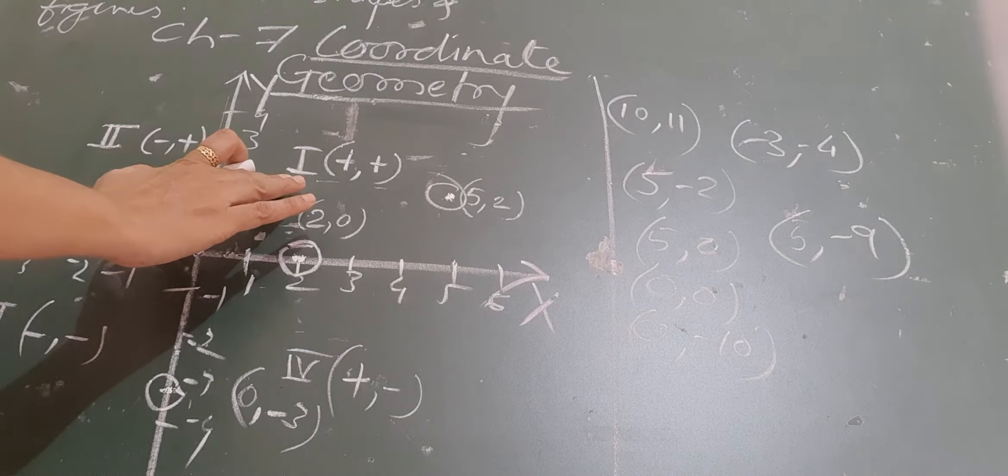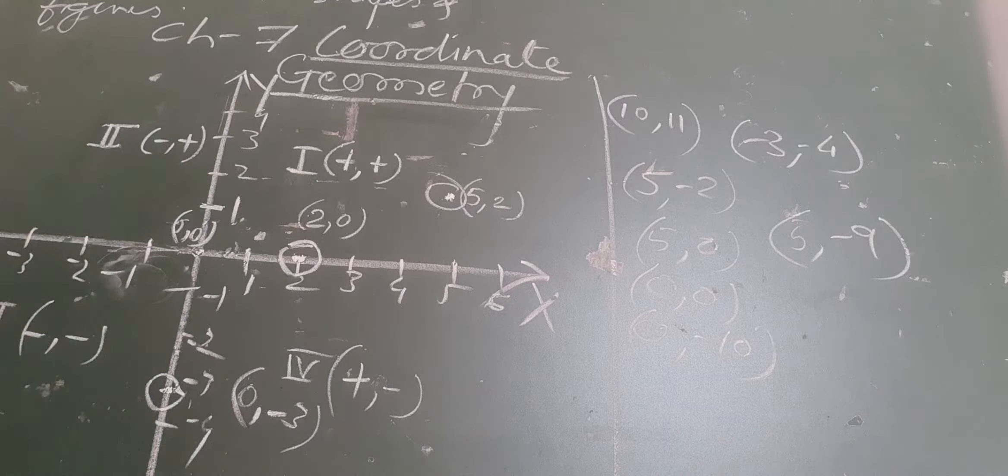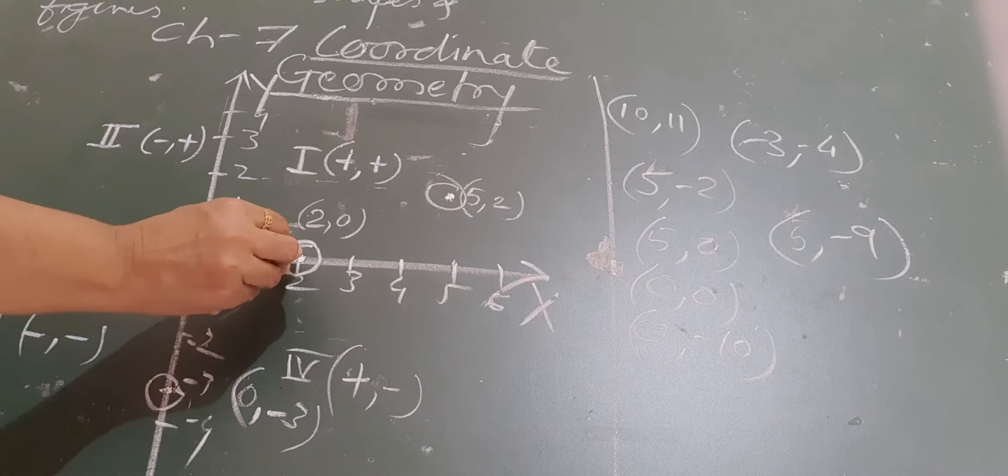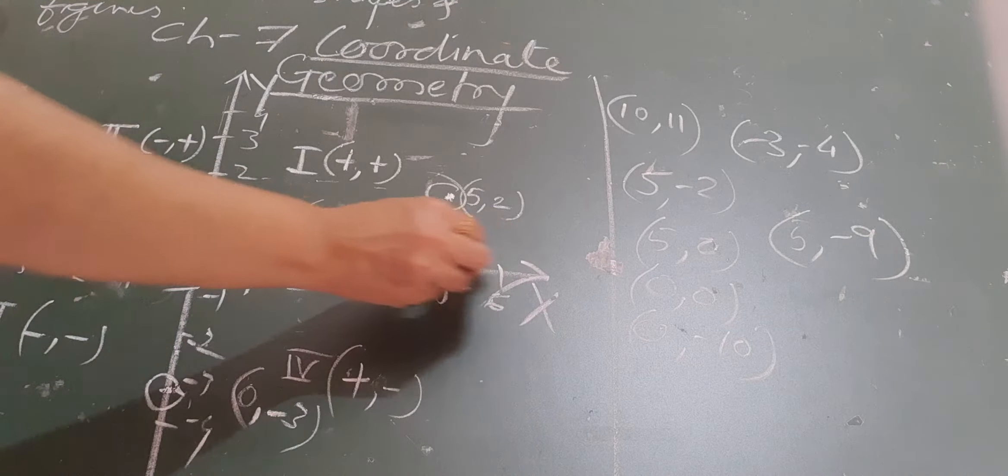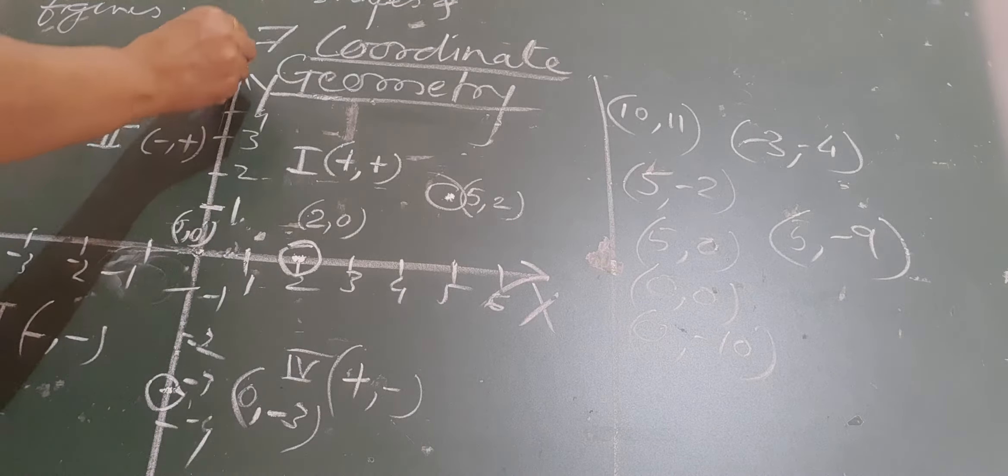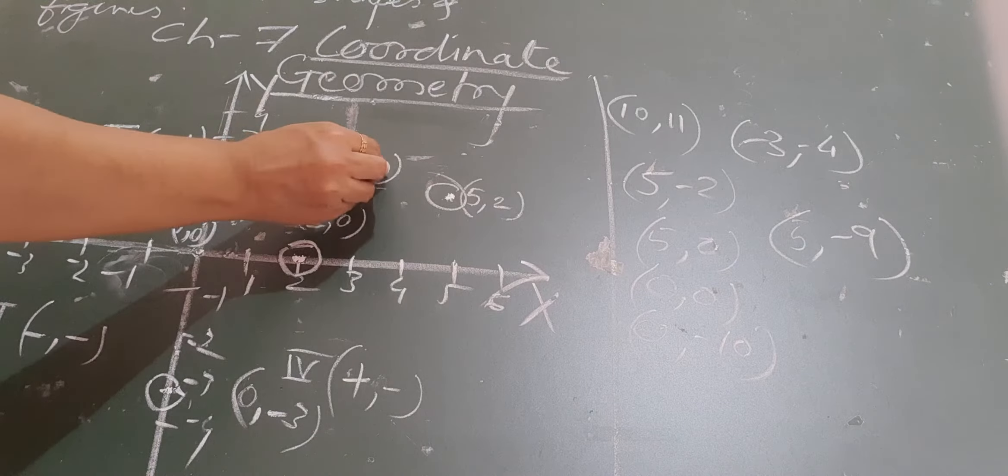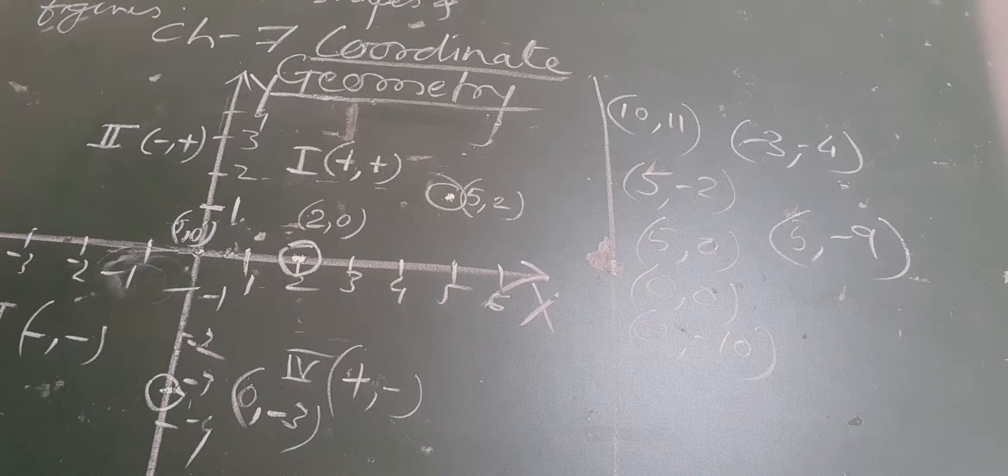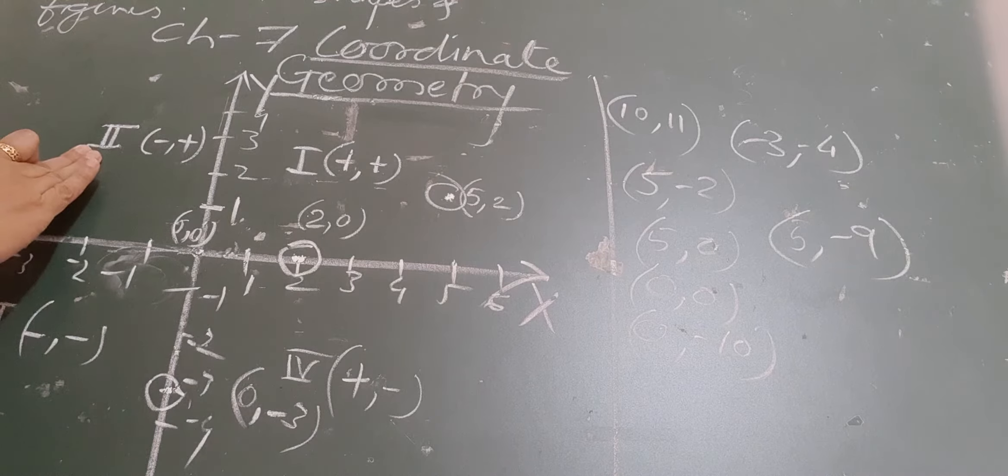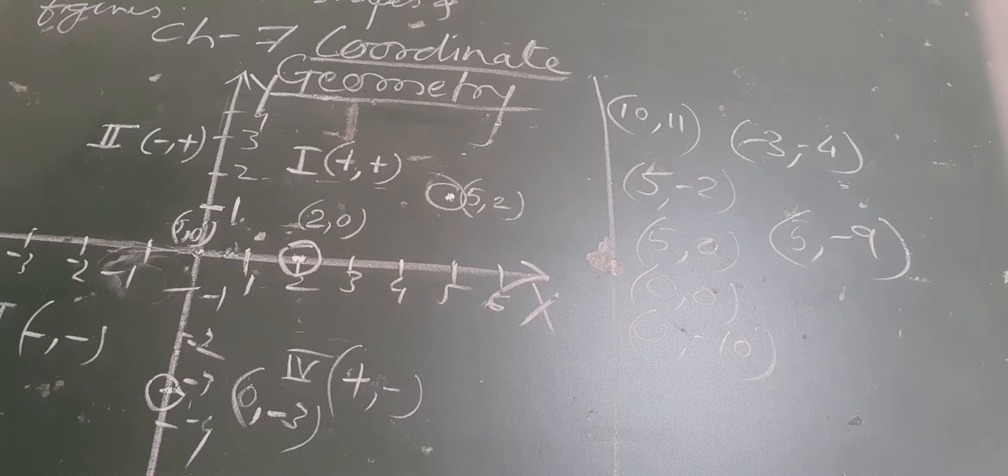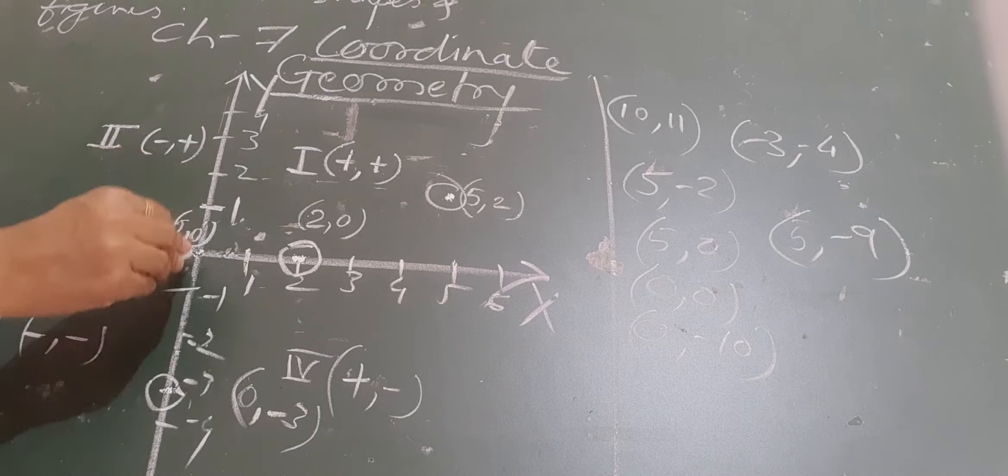This is the first quadrant. In the first quadrant, all the x coordinates are positive and all the y coordinates are positive. Hence, it is represented as positive, positive. In the second quadrant, the x coordinates are negative and y coordinates are positive.